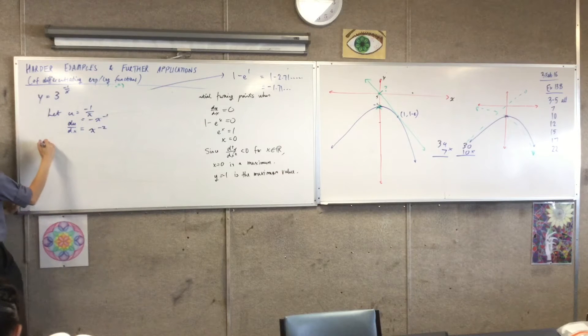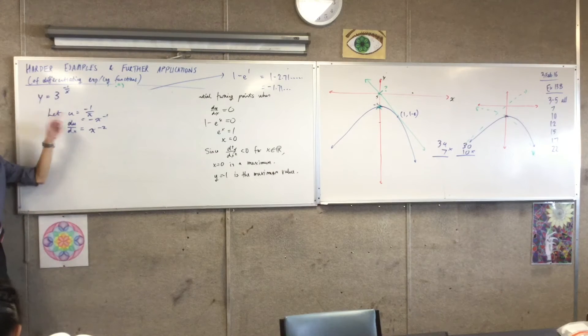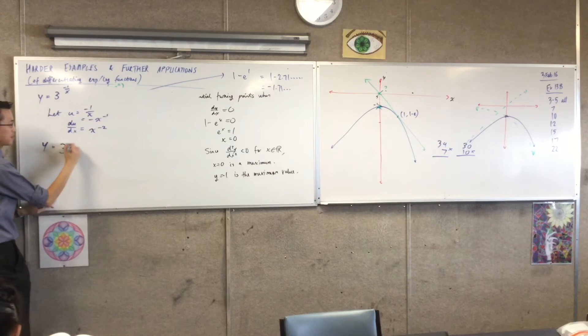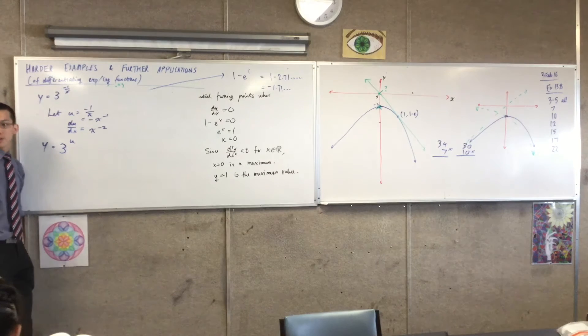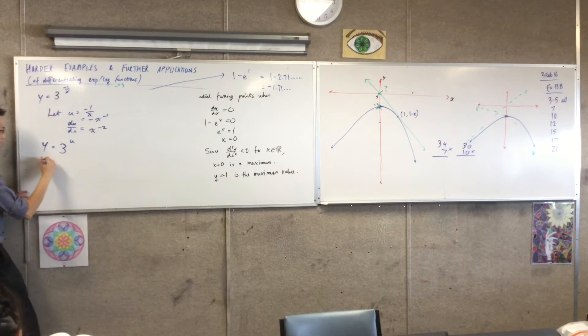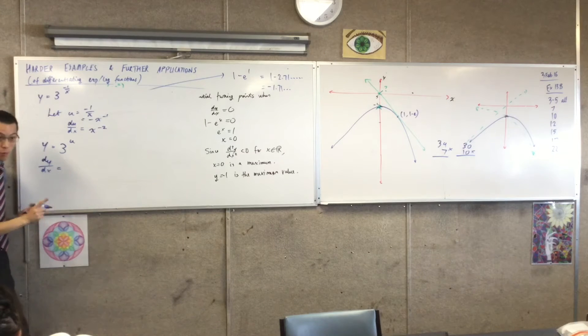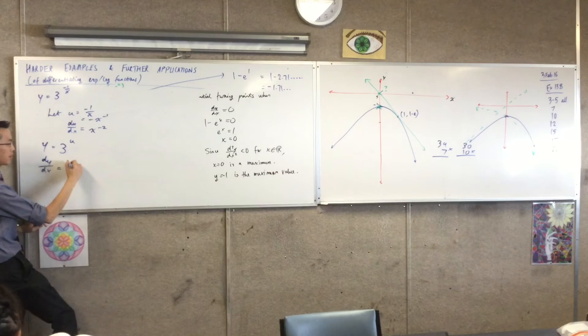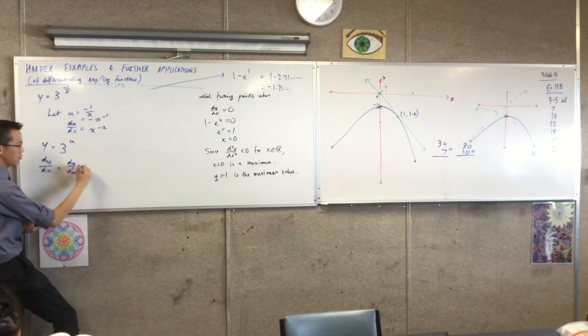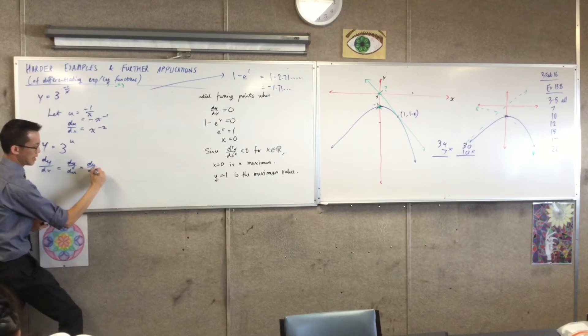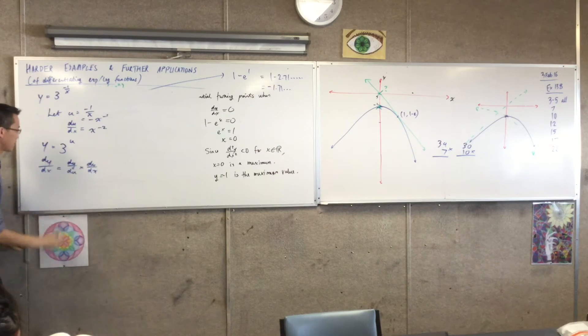Once I've got that, I also need y in terms of u, so that's 3 to the power of u. Okay, so far, so good. So, now I'm ready to actually use chain rule, and hopefully not get my wires crossed. So I've got dy/du times du/dx. There's my chain.